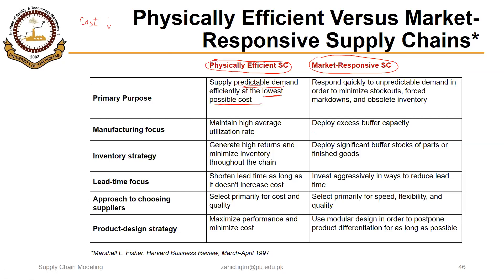For a market-responsive supply chain, the main focus is to quickly respond to unpredictable demand in order to minimize stockouts, forced markdowns, and obsolete inventory. While an efficient supply chain's manufacturing focus is to maximize utilization, the responsive supply chain focuses on flexibility, requiring extra capacity. Its inventory strategy deploys significant buffer stocks — extra inventory of parts or finished goods — to satisfy unpredictable demand, along with extra capacity.